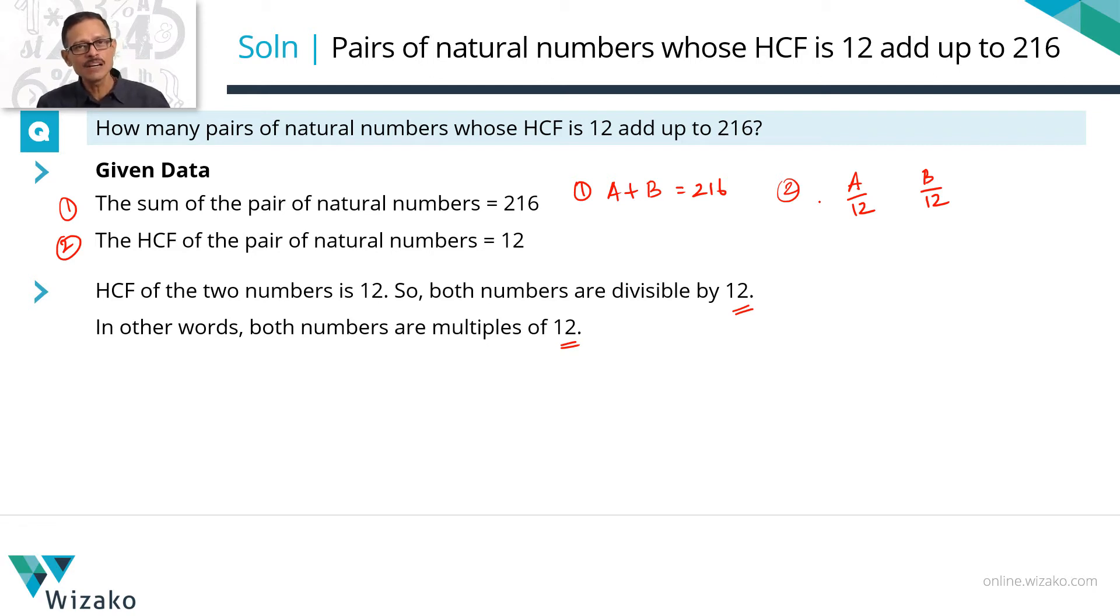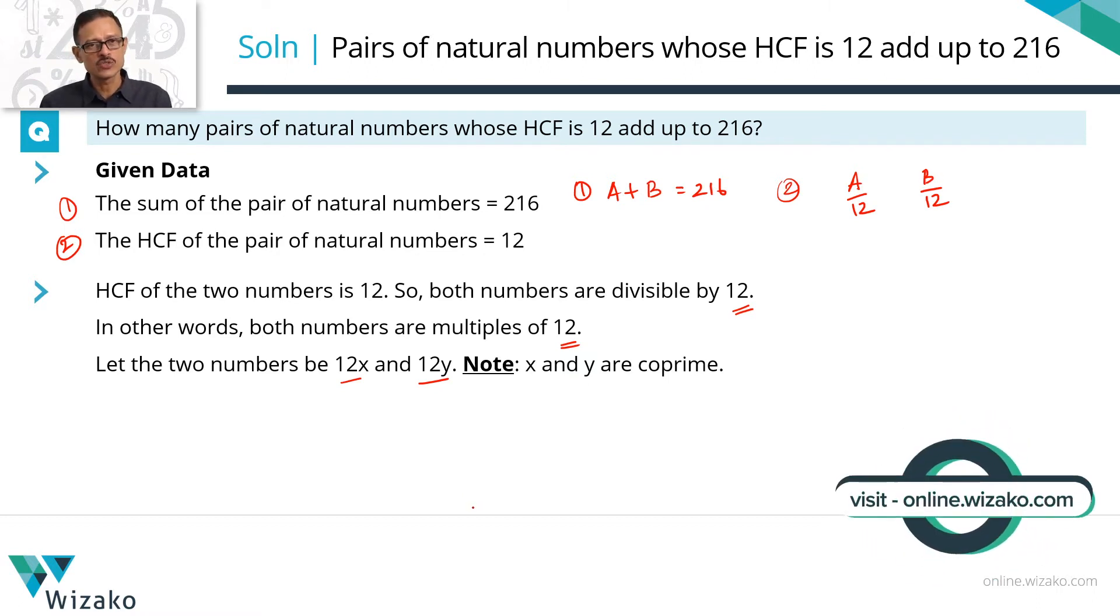So we can write A as some multiple of 12 and B as some other multiple of 12. So we'll write them as 12x and 12y. If 12 is the HCF of these two numbers, 12 takes away everything that's common between these two numbers. That's what the HCF essentially does. So whatever is left, that is x and y, which are the things that are left in A and B, they will have nothing in common.